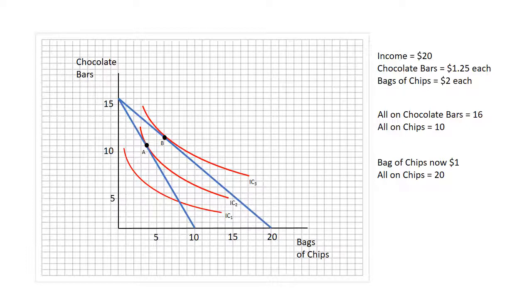In other words, if we were to leave the relative prices of chips and chocolate bars the same and just increase the consumer's income so that they were able to afford a bundle that's on indifference curve three, meaning that they'll be just as well off as they would be with the price decline in the bag of chips, we can draw a hypothetical budget constraint that has that property. It is an increase in income without a change in the relative price of chips or chocolate bars that gets the person up to that IC3 indifference curve at point C.